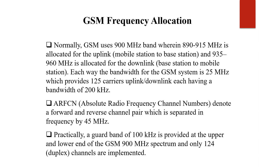ARFCN — Absolute Radio Frequency Channel Numbers — denotes a forward and reverse channel pair which is separated in frequency by 45 MHz. This 45 MHz gap between the uplink and downlink frequencies separates the forward and reverse channel pairs.